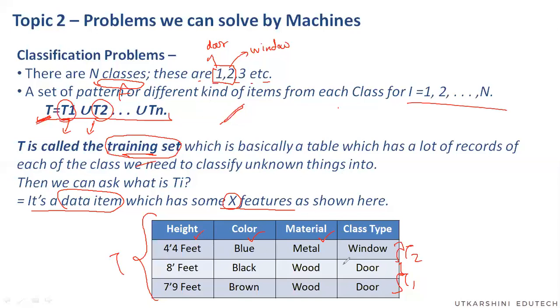So height for a window, which we have recorded, it's 4.4 feet. The color of those windows is blue, I think it's Indian railways, material is metal. And the two doors that we have recorded the data for, one is eight feet, other is 7.9 feet. One of them is black, other is brown, and both of them is made out of wood.